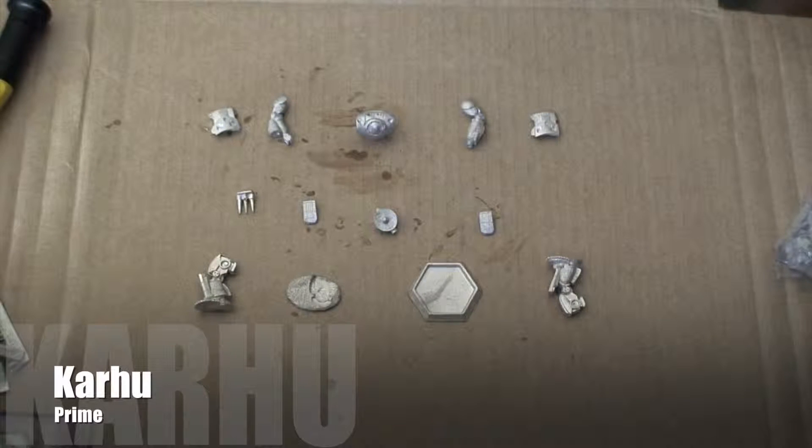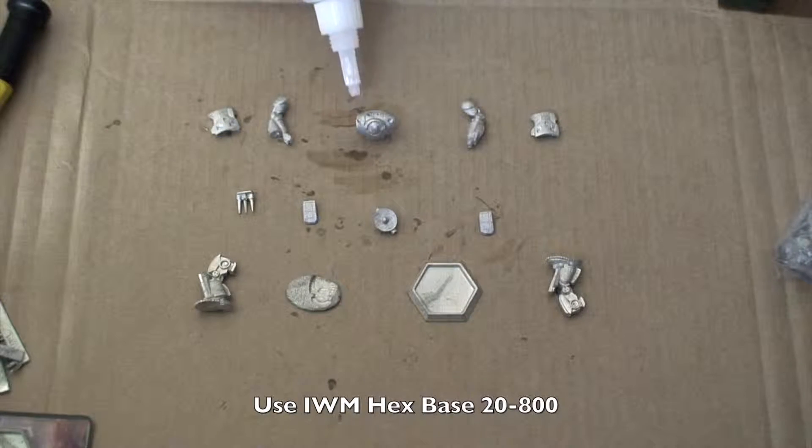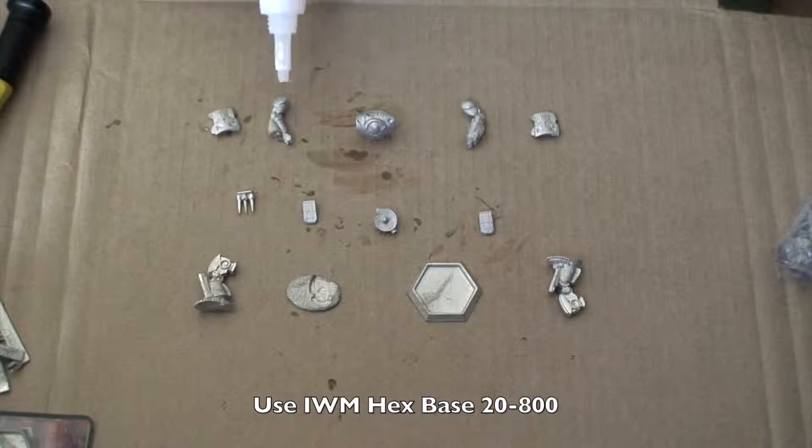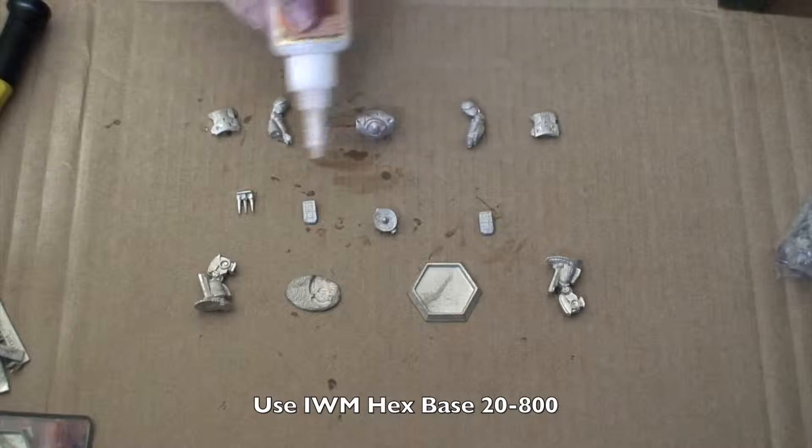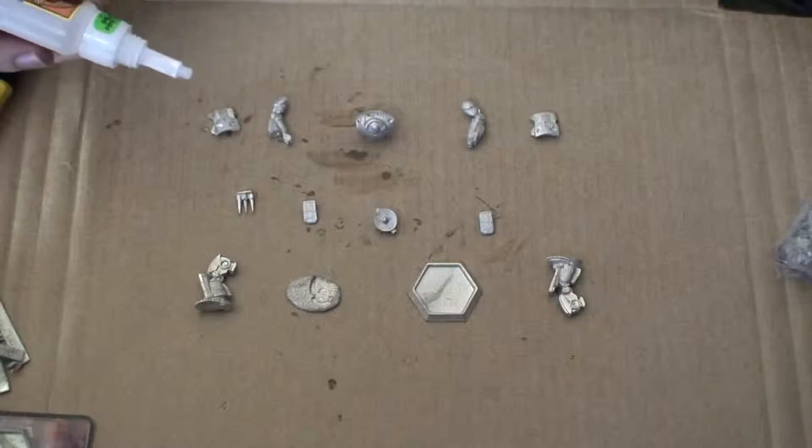As you can see we have our Karu here. We have quite a few different various pieces: the main body, two arms, the claw for the arms, shoulder pads, back pads, a hip joint, two legs, a base, and then the hex base for the maps.